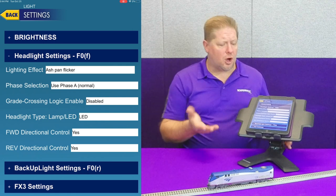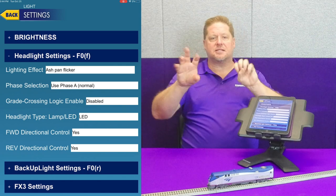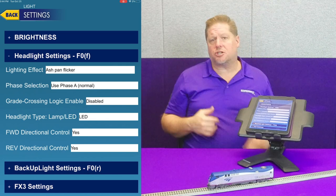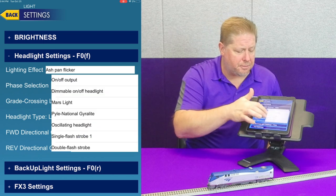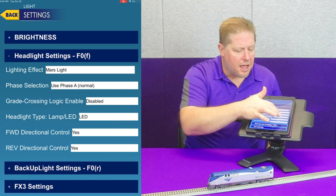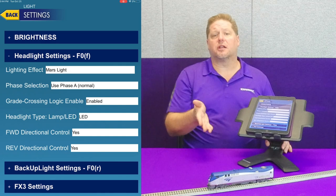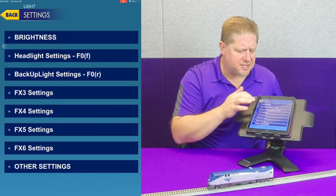Now that we've gone through all of them — we have phase selection, phase A and phase B, which is how ditch lights alternate and flash instead of flashing together. Crossing logic lets lighting effects trigger when crossing logic activates. For example, setting the Mars light with crossing logic enabled gives you a solid light normally, but when you blow the horn you'll see the Mars light effect start — which is also how alternating flashing ditch lights work.